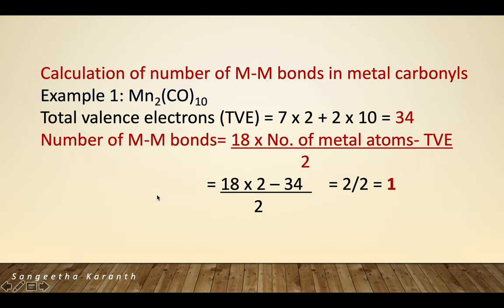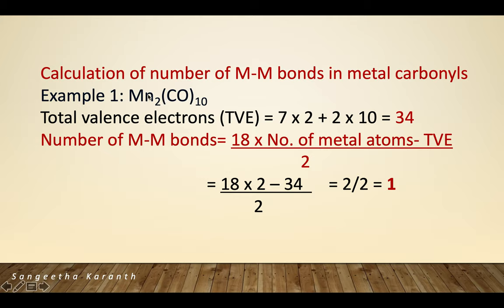For complexes with metal-metal bonds, the number of metal-metal bonds is calculated using the formula: (18 × number of metal atoms − total valence electrons) / 2. For Mn2(CO)10: manganese has 7 valence electrons, so 7 × 2 = 14 from metals; 10 carbonyls donate 2 electrons each, giving 20. Total valence electrons (TVE) = 34. So (18×2 − 34)/2 = (36−34)/2 = 1 metal-metal bond.